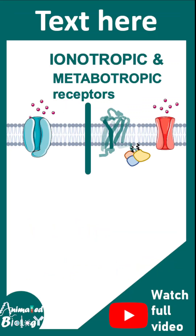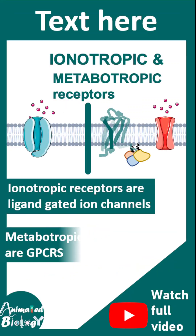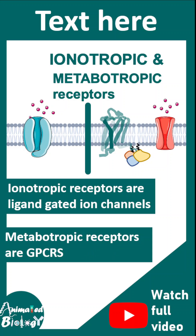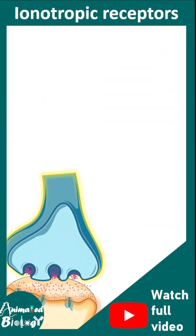Ionotropic receptors are ligand-gated ion channels, whereas metabotropic receptors act via GPCR signaling. Let's look at a post synapse to understand the ionotropic receptors.